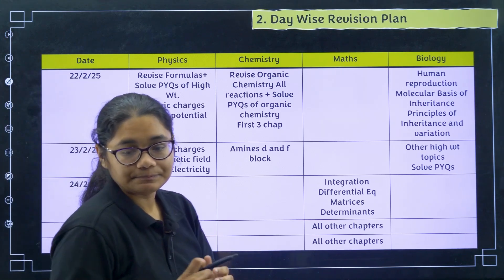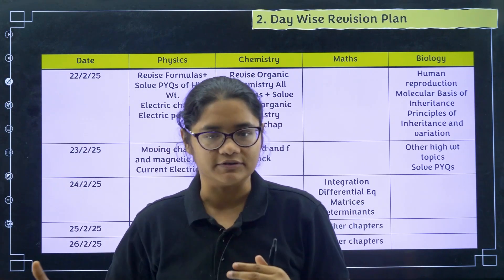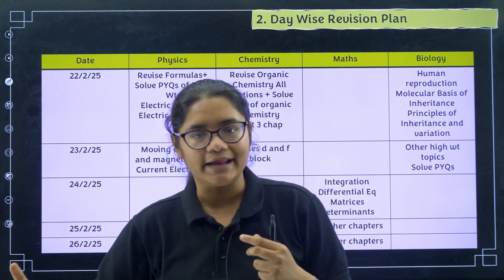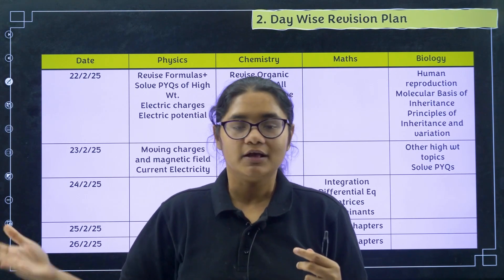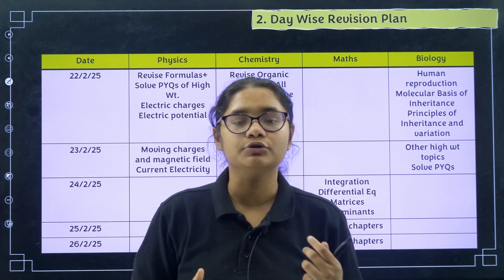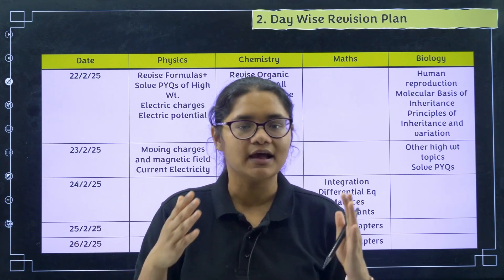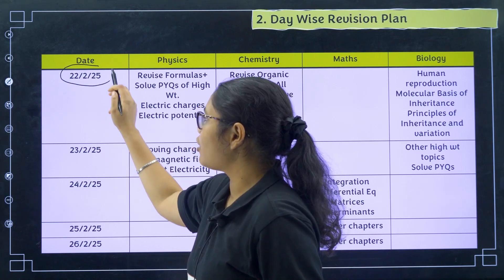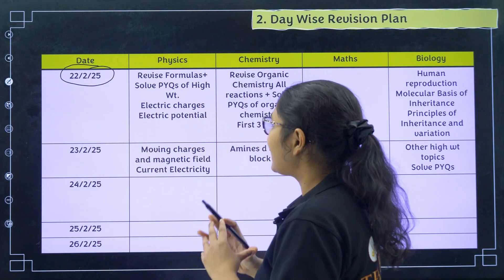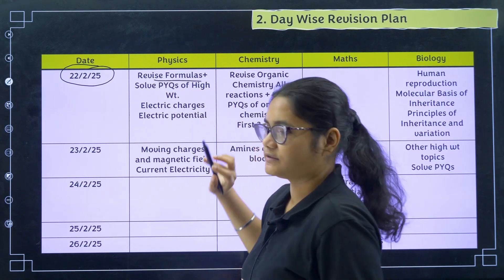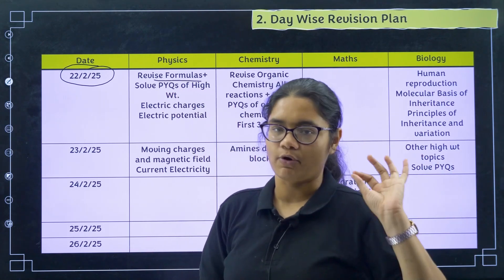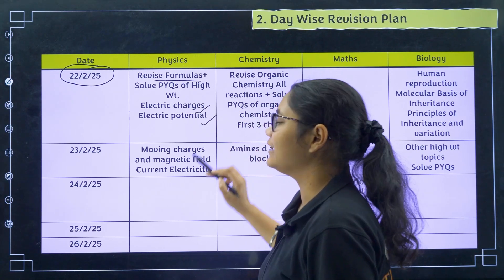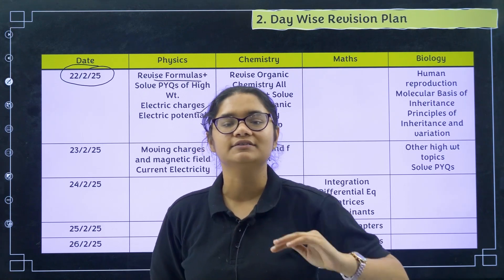Now I will be giving you a day-wise plan. Our exam is starting from 1st of March, and many students will be writing the Kannada exam on 27th and 28th, so you have to focus on Kannada only those days. From today till 26th, you should be studying and revising other subjects. On 22nd February, revise all physics formulas across all chapters, and then solve PYQs of high-weightage chapters like electric charges and fields and electric potential — last five years of PYQs.